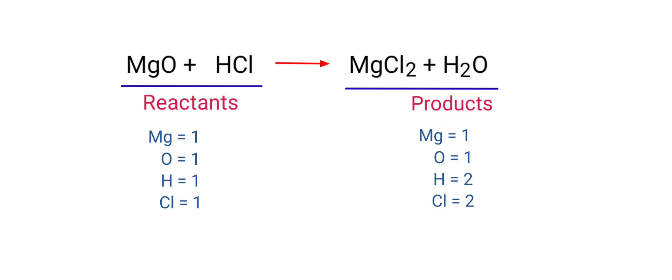The number of atoms are not balanced on both sides. To balance the chemical equation we need to make use of coefficients. A coefficient is a number that we place in front of a chemical formula.